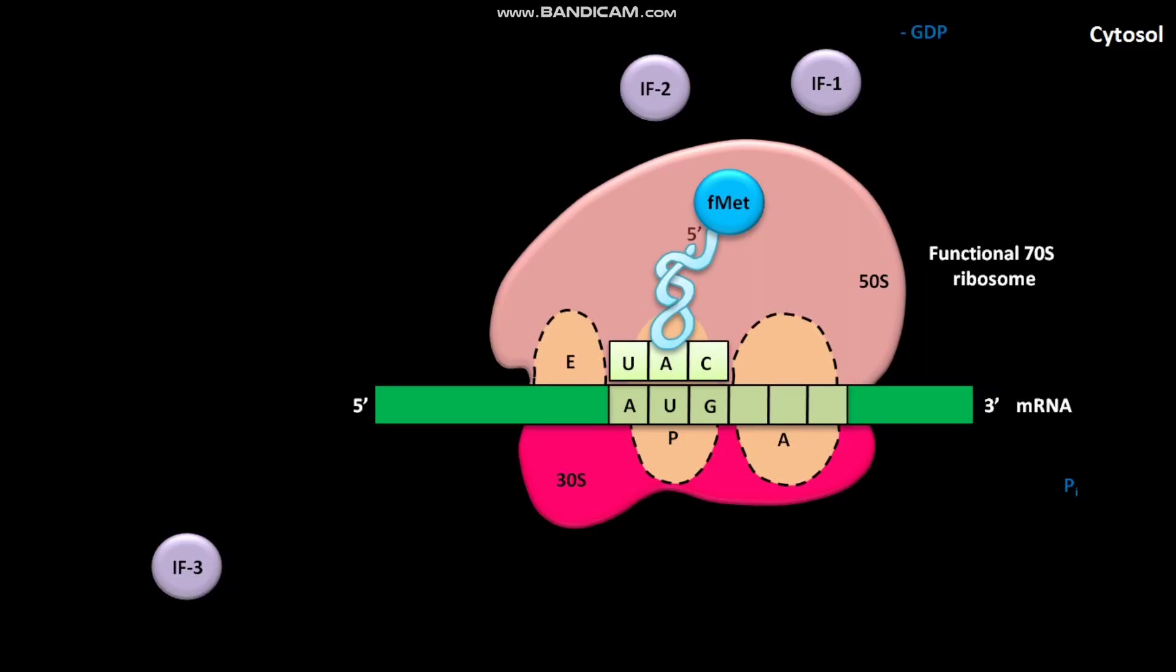After these steps, a functional 70S ribosome is produced. This functional 70S ribosome is also called the initiation complex. This initiation complex contains the mRNA and the fMet-tRNA. The initiation complex is now ready for elongation.